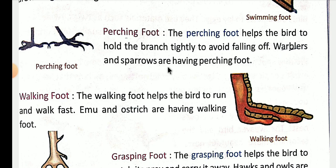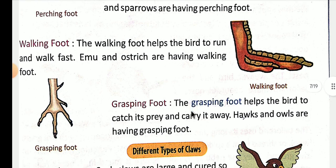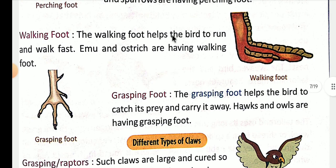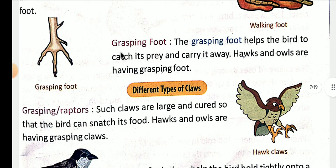Warblers and sparrows have perching feet. Ab walking foot ke baare mein baat karte hain. The walking foot helps the birds to run and walk fast. Is tarike ke foot bird ki help karte hain daudne mein aur bahut tez chalne mein. Emu and ostrich have walking feet — emu aur ostrich ke is tarike ke foot paaye jaate hain.